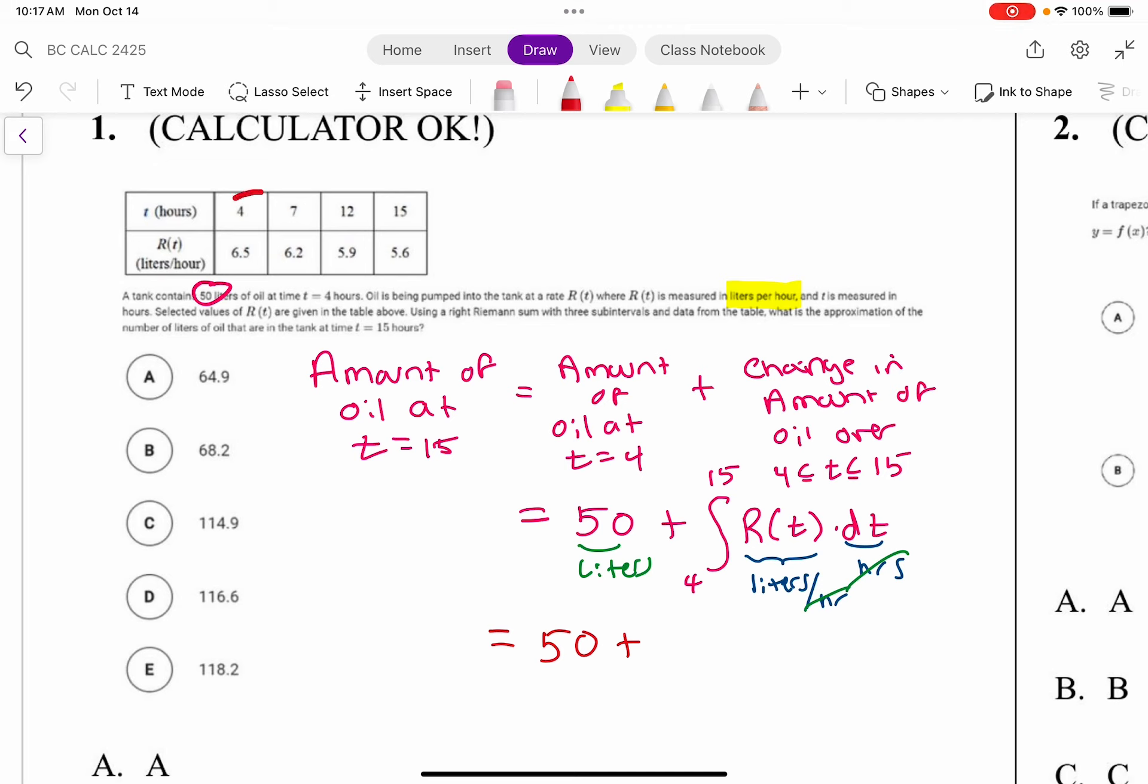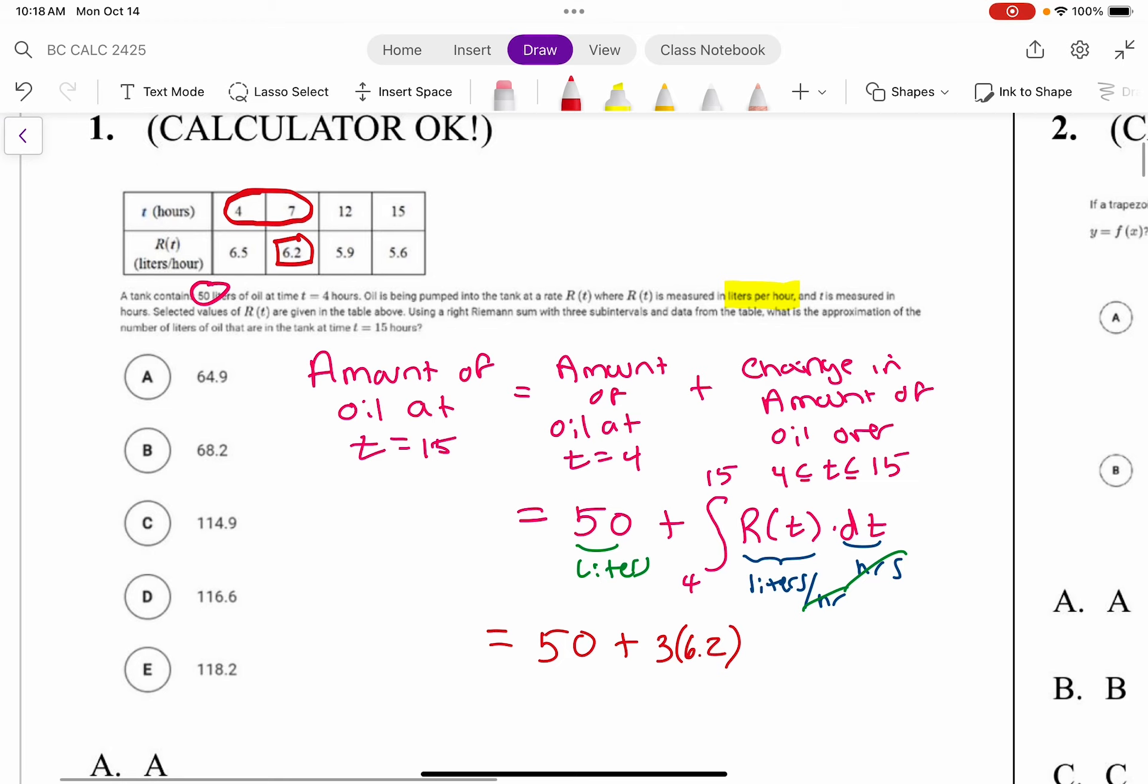So the base of our first rectangle is going to be that difference, which is 3, and then the right hand side is the right y value, that's 6.2.